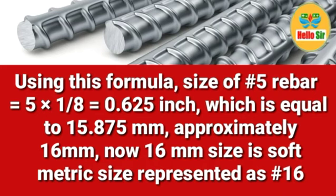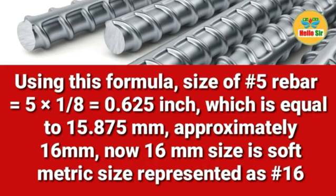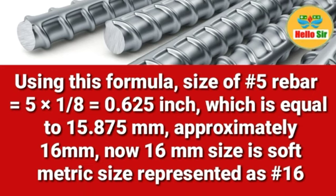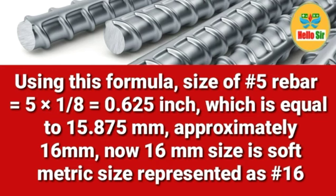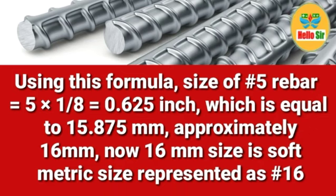0.625 inch converts to 15.875 mm, approximately 16 mm. This 16 mm metric size is represented as number 16 rebar in the metric system.